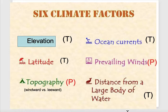Elevation, which affects temperature — the higher you go, the colder it gets. Latitude, which affects temperature — the higher your latitude, the colder it gets. Topography: if you're on the windward side of a mountain range it's going to be wet; if you're on the leeward side it's going to be dry.